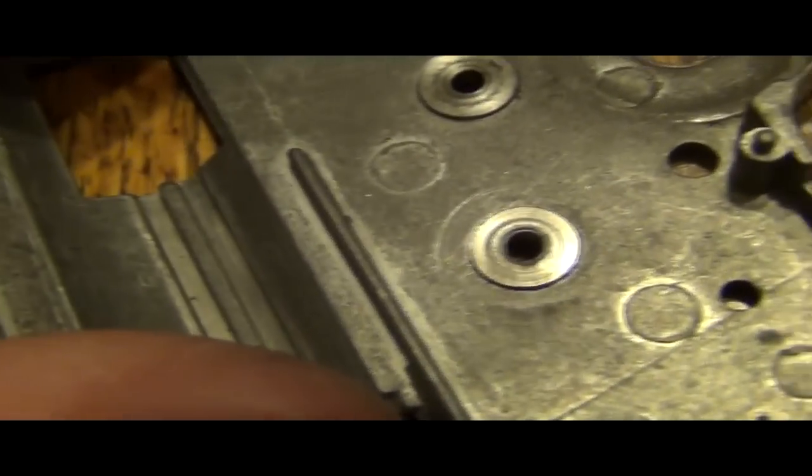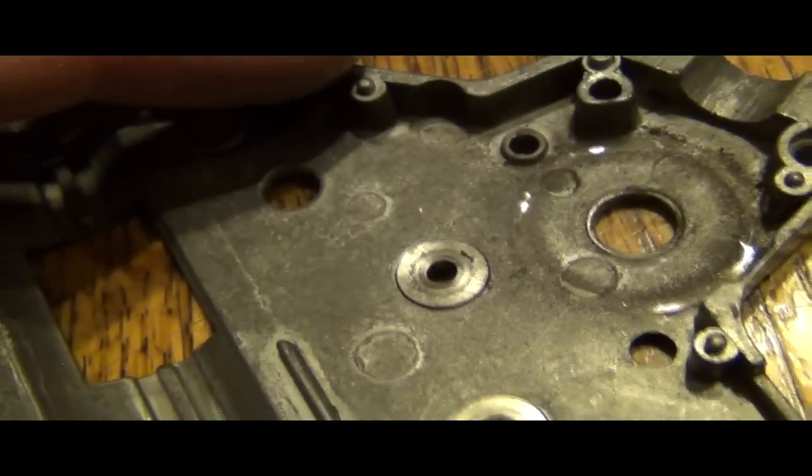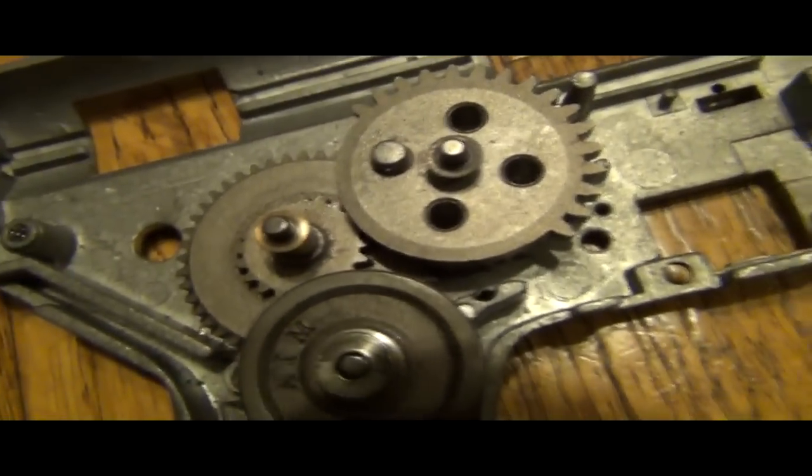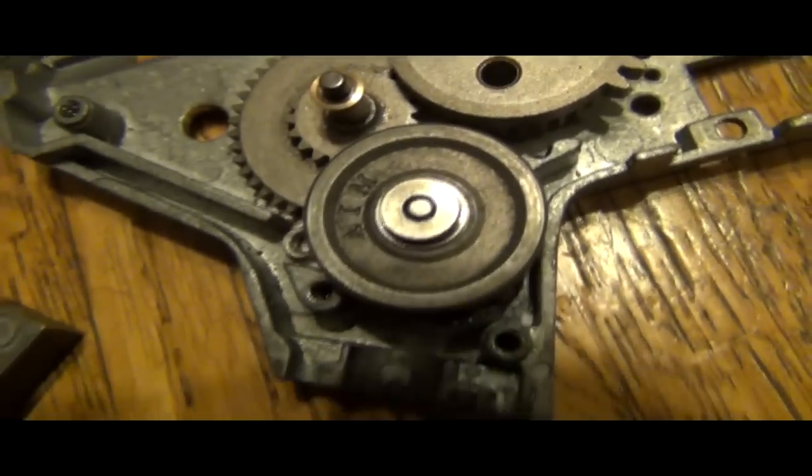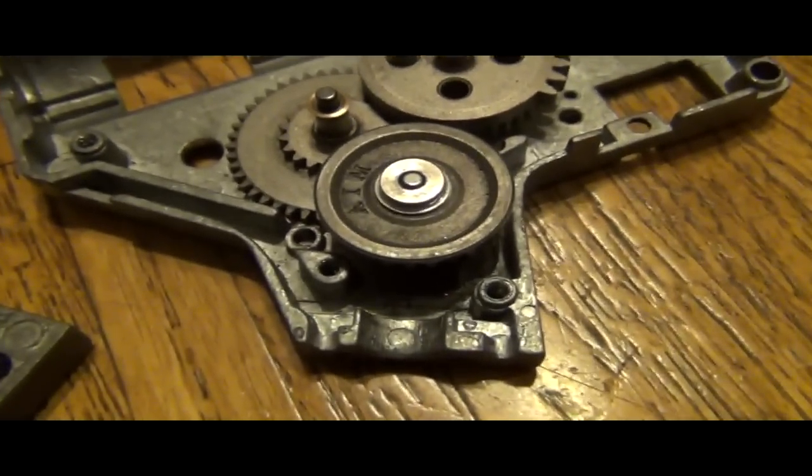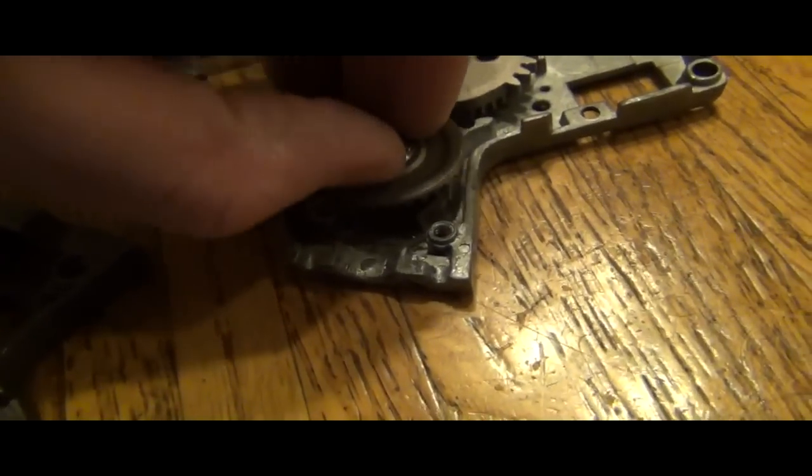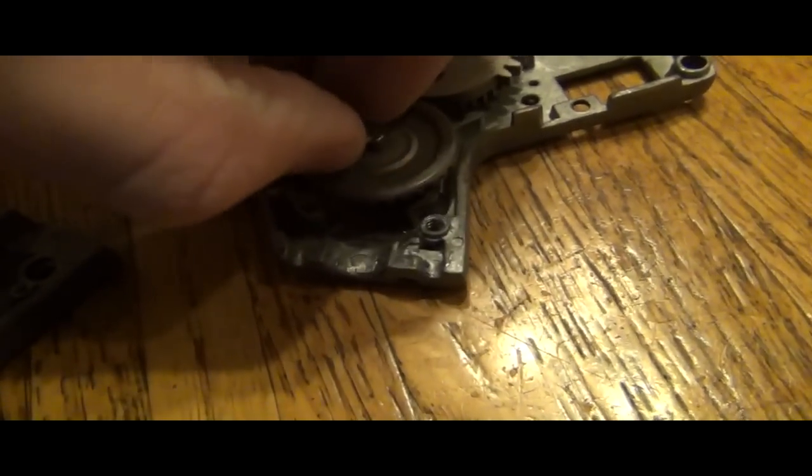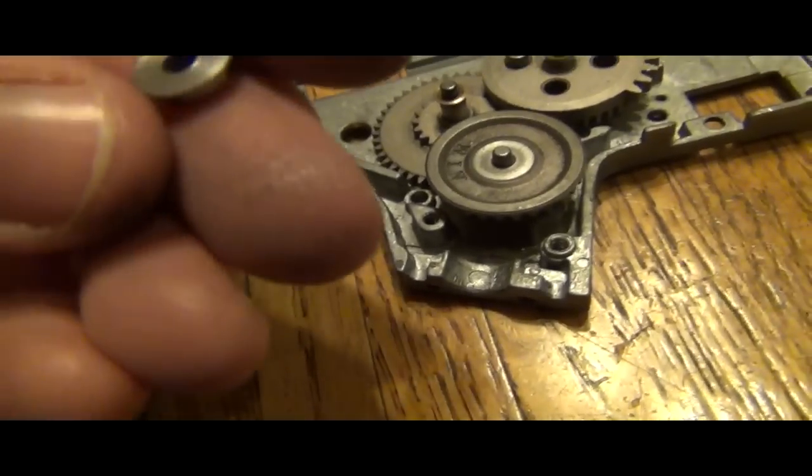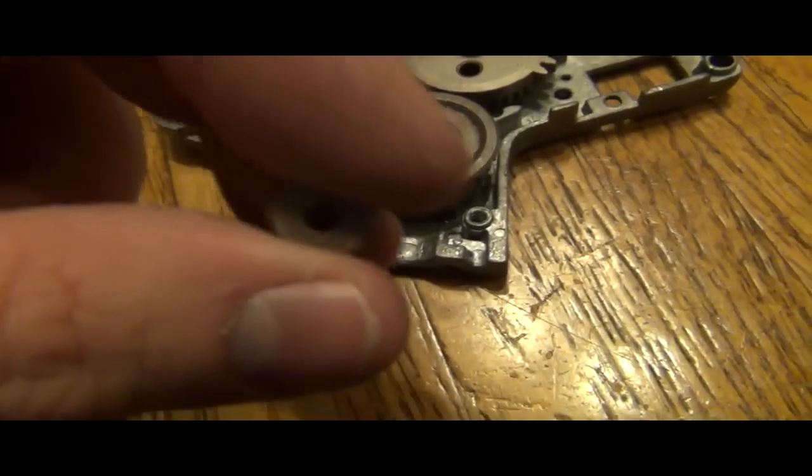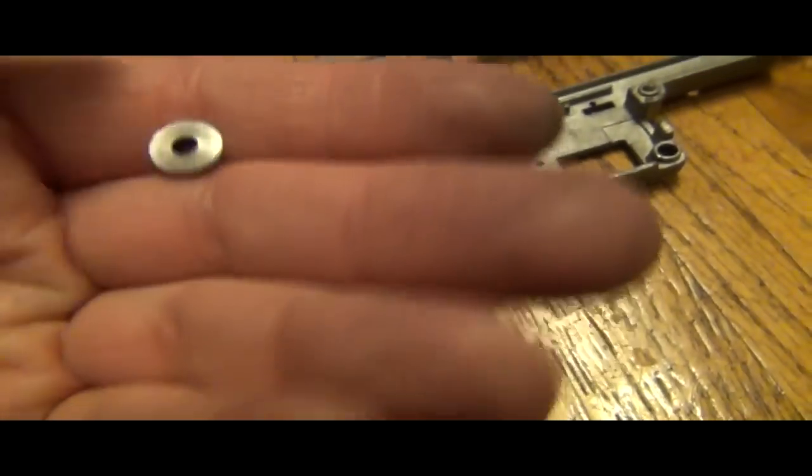There's not much on the other bushings. Look here and there's a lot of, a little bit of black there. A lot of black here. So pull this off. And it looks like the shim is gone again.